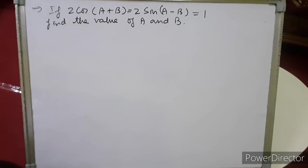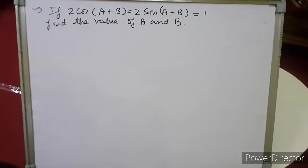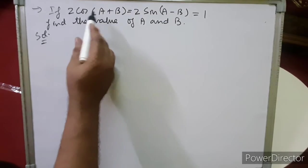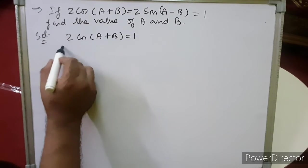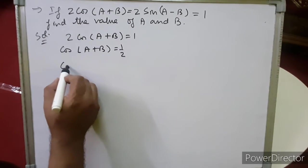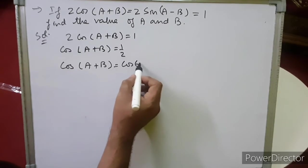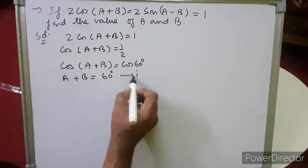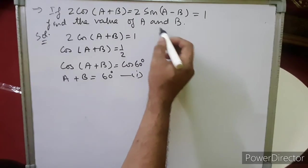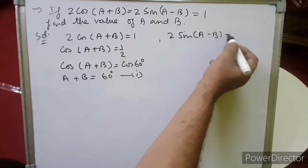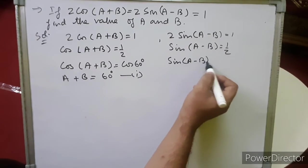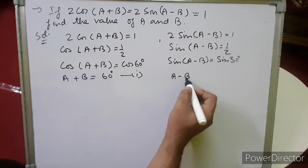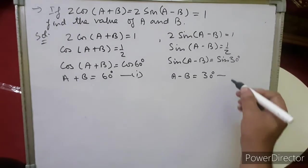Now, given 2cos(a + b) = 1 and 2sin(a − b) = 1, find the values of a and b. From 2cos(a + b) = 1: cos(a + b) = 1/2 = cos 60°, so a + b = 60° — equation 1. From 2sin(a − b) = 1: sin(a − b) = 1/2 = sin 30°, so a − b = 30° — equation 2.